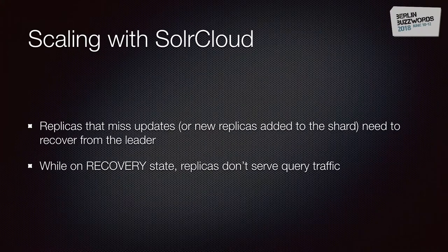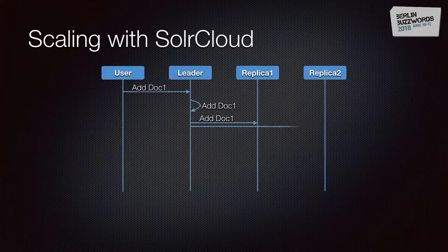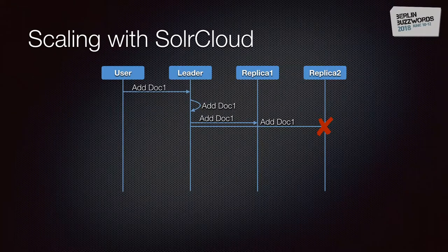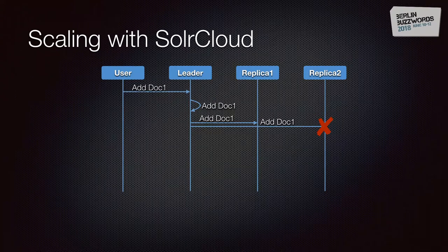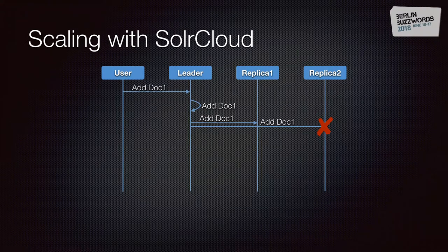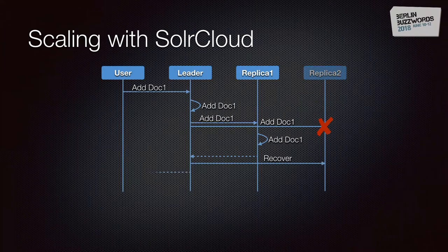Another feature was self-recovery of nodes. What happens in distributed indexing if replica 2 can't respond to an update — due to a network issue, a downed node, garbage collection, or any other reason — is that replica 1 proceeds as normal, and the leader tells replica 2 that it needs to recover.